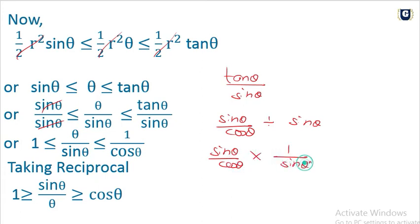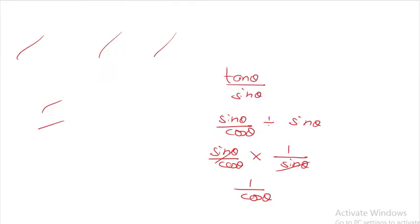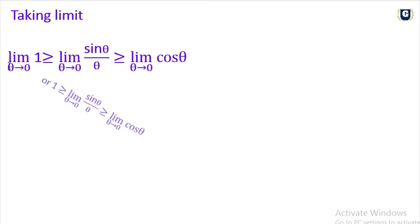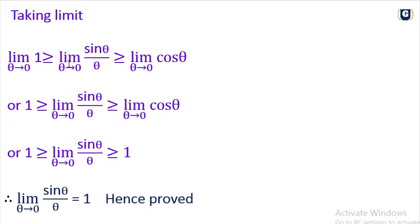Dividing through by one half R squared sin theta, sin theta cancels, giving 1 is less than or equal to theta over sin theta is less than or equal to 1 by cos theta. Taking reciprocals: limit as theta tends to 0 of 1 is greater than or equal to limit of sin theta over theta is greater than or equal to limit of cos theta.